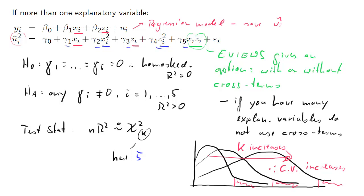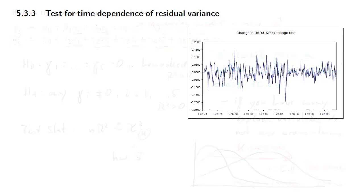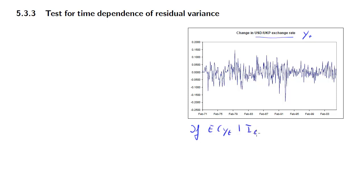That was the White test. We'll continue with testing for different types of heteroscedasticity. Here is a picture of the change in the US dollar/UK pound exchange rate — this will be time series data. Just imagine that you had written down a model to calculate expectations of yt conditional on information available at t minus 1, such as an AR model. If you do that with this sort of series, you will see that the conditional expectation is approximately zero because there is very little to forecast, and therefore yt is going to be approximately equal to the error term. So you can think of this graph as displaying also the error term.